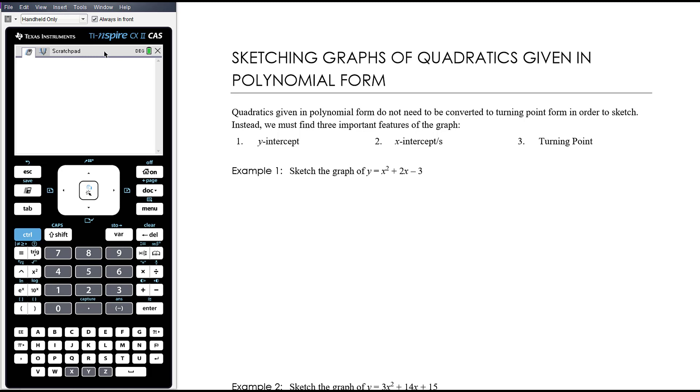The last thing we want to look at as part of the assumed knowledge for Maths Methods is sketching graphs of quadratics when they're given in polynomial form or expanded form or general form. Obviously we talked about previously that it is possible to change it from this polynomial form to turning point form using completing the square, and we'll review how to complete the square in the next video. But it's also important to understand that you don't need to convert it to turning point form in order to be able to sketch it. You're just using a different set of tools to sketch it from this particular form.